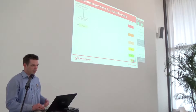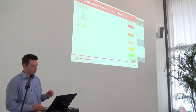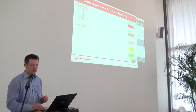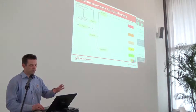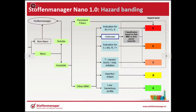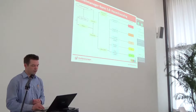The hazard banding — I will not go into this toxicological part because that was dealt with this morning — but it's basically a decision tree which guides you to a hazard band in the end, which spreads from A to E. A being the lowest hazard profile and E being the most stringent hazard.